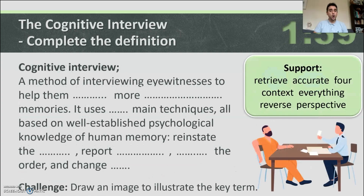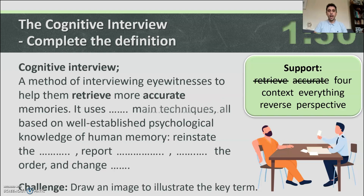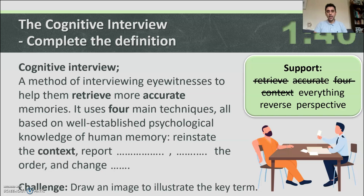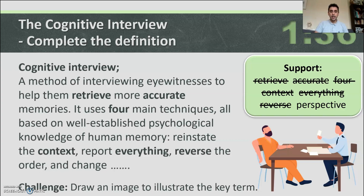To summarise: the cognitive interview is a method of interviewing witnesses to help them retrieve more accurate memories. It uses four main techniques, all based on well-established psychological knowledge of human memory: reinstate the context, report everything, reverse the order, and change perspective.